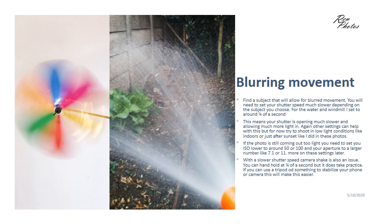Blurring movement is basically the opposite of what we've just done. Now you're going to change your shutter speed to open and close a lot slower - we're going to go with about one-fourth of a second. The photos that you see here were taken at around that speed, one-fourth of a second, to create that motion blur. And obviously it depends on how fast your subject is moving, but we managed to get that with one-fourth of a second here.